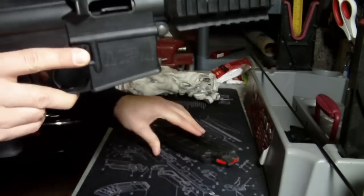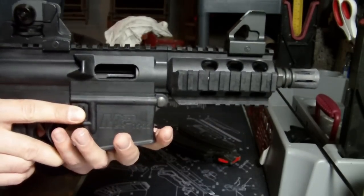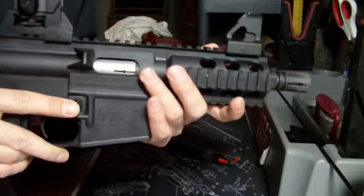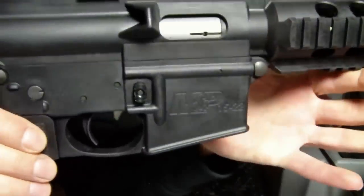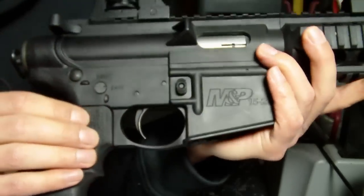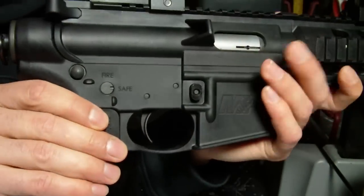To disassemble, what I'm going to start with is just obviously releasing the magazine. We'll go ahead and push the bolt forward into the forward position. The pins are very similar just to an AR-15 type rifle.